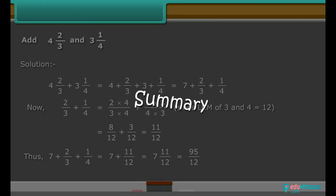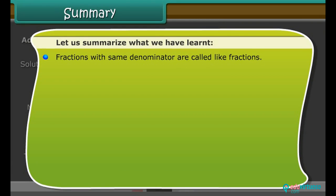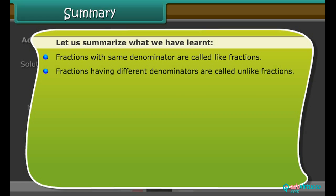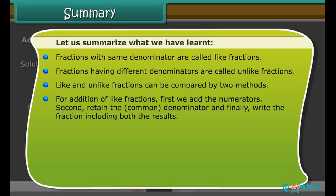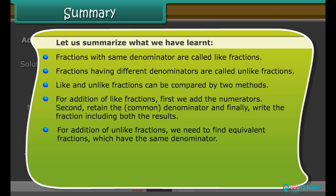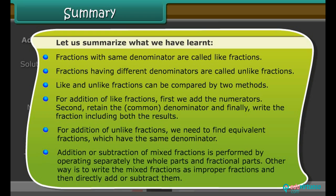Summary. Let us summarize what we have learnt. Fractions with the same denominator are called like fractions. Fractions having different denominators are called unlike fractions. Like and unlike fractions can be compared by two methods. For addition of like fractions, first we add the numerators, then retain the common denominator, and finally write the fraction including both results. For addition of unlike fractions, we need to find equivalent fractions which have the same denominator. Addition or subtraction of mixed fractions is performed by operating separately on the whole parts and fractional parts, or by writing the mixed fractions as improper fractions and then directly adding or subtracting them.